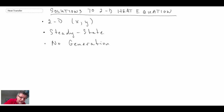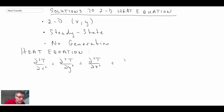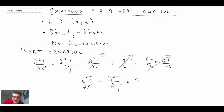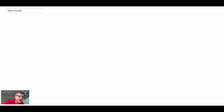Let's look at the heat diffusion equation and make some simplifying assumptions. With our approximations, the derivative with respect to the Z-coordinate goes away, there is no generation, and we're dealing with steady state, so transient terms disappear as well. What we're left with is still a partial differential equation, and consequently there are not a large number of analytic solutions. There are a number of limited analytical solutions, but not that many.